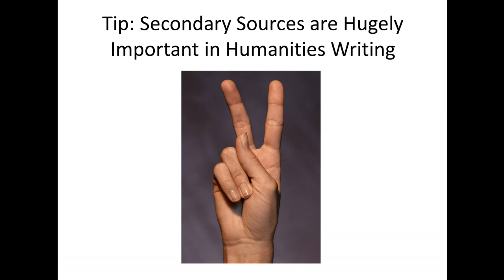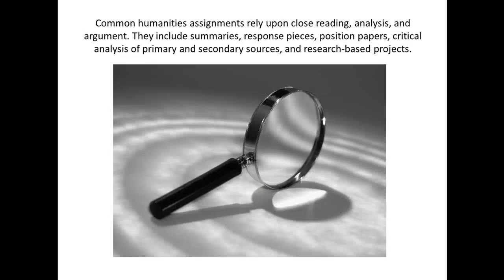Here's a tip: secondary sources are hugely important in the humanities. You'll have your primary text and then secondary texts — scholars, perhaps, who have studied the subject before you. Common humanities assignments rely upon close reading, analysis, and argument. They include summaries, response pieces, position papers, critical analysis of primary and secondary sources, and research-based projects.